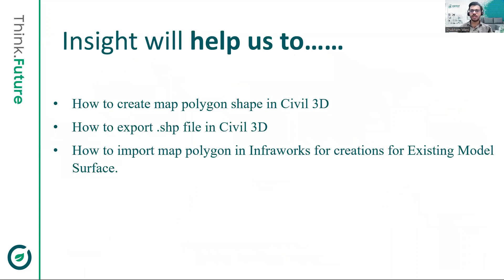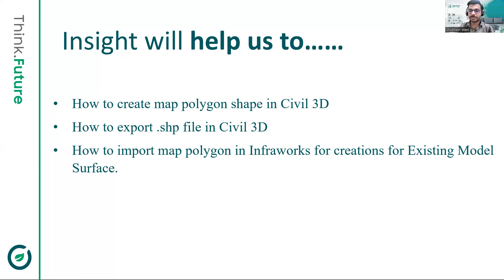Creating a polygon shape file in Infraworks can be a tedious process, leading to inefficiency in project development. The time-consuming and manual creation of polygons hampers productivity and causes delays in project timelines. We can streamline the workflow by leveraging the power of Civil 3D to generate a polygon shape file (.shp) effortlessly, and then import it seamlessly into Infraworks projects.